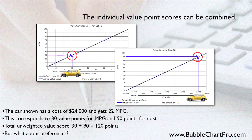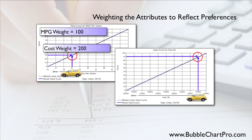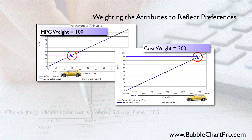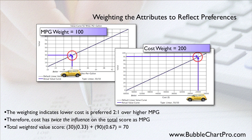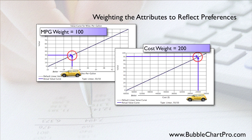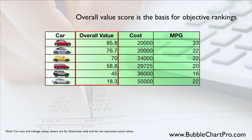So how do we show buyer preferences? We can express preferences in our model by weighting the attributes. For example, we can weight the gas mileage attribute at 100 and we can weight the cost attribute at 200, meaning that the cost of the car is twice as important and has twice the influence in the final value score as gas mileage. When we factor in the weights, the value score is 70. It's important to remember that BubbleChart Pro Plus performs all of the math for you automatically. All you have to do is enter your weights. The weighted overall value score therefore becomes the basis for objectively comparing and ranking your different projects based on your selected attributes and the relative weights that you have assigned to those attributes.